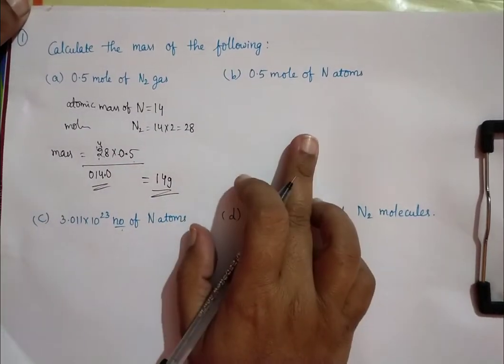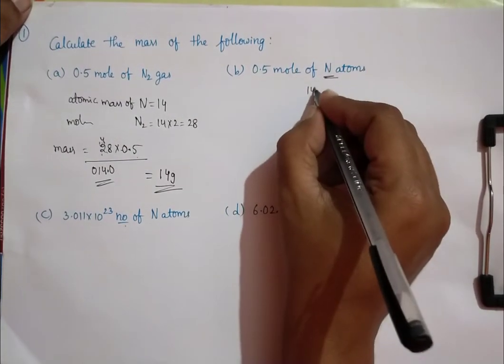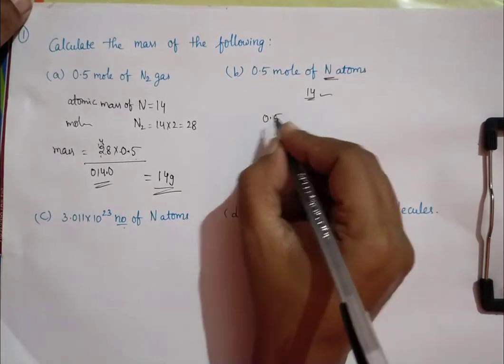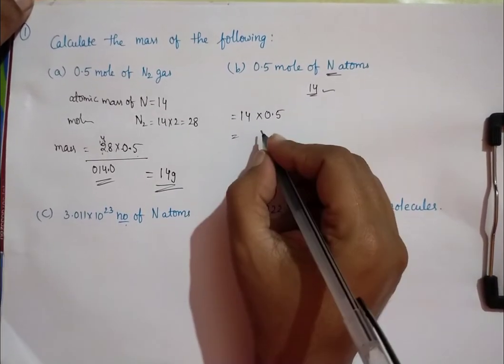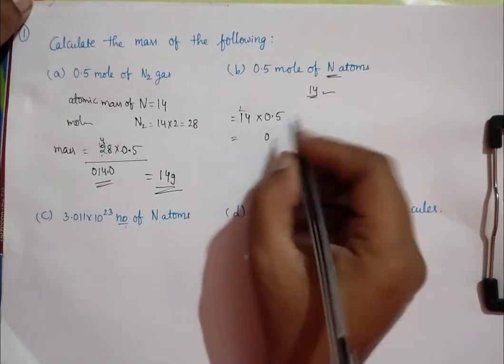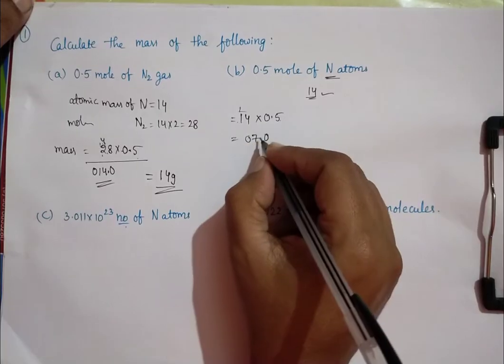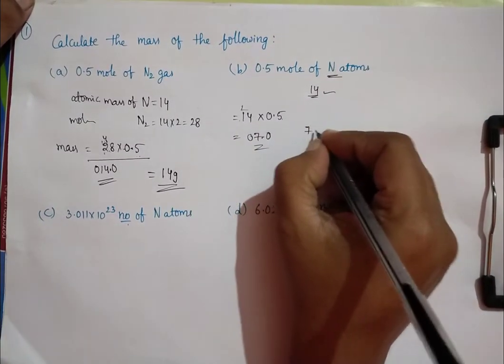In the same way, we want to solve this one. This is atom only. It means here we have to use 14, times 0.5. That equals 7. So the answer is 7 grams.